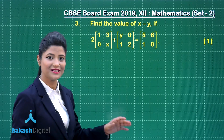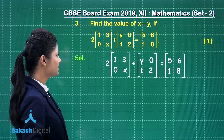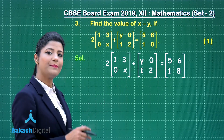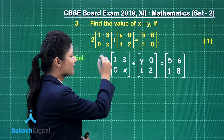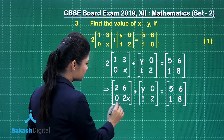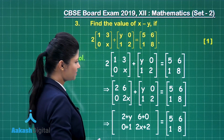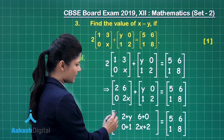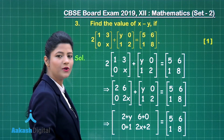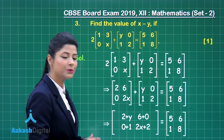Let us take up question number 3. This question states: find the value of x − y given the matrix equation. Here the scalar 2 is being multiplied to a matrix, so 2 gets multiplied to each and every element, resulting in the matrix having elements 2, 6, 0, and 2x. Next we add up the two matrices, and by adding corresponding elements we get the matrix with elements 2+y, 6+0, 0+1, and 2x+2. On the left-hand side and right-hand side we have two matrices of the same order, so these are two equal matrices.